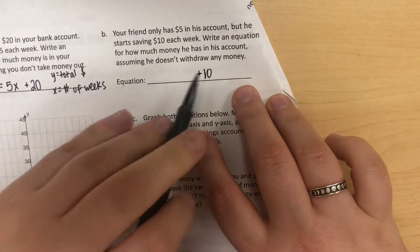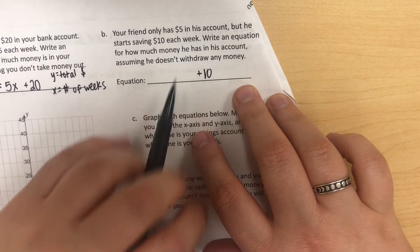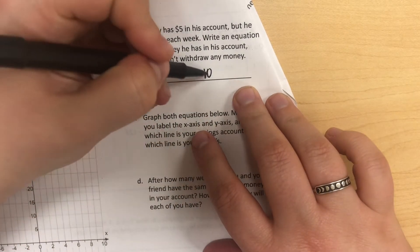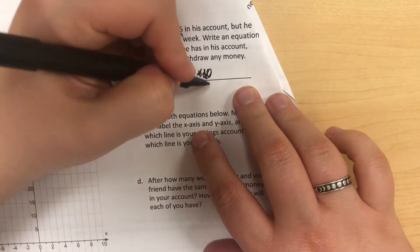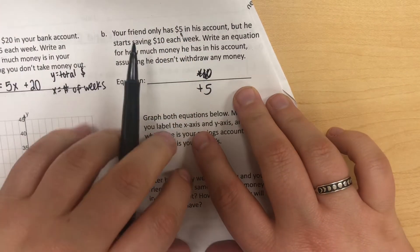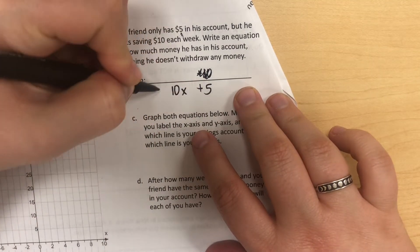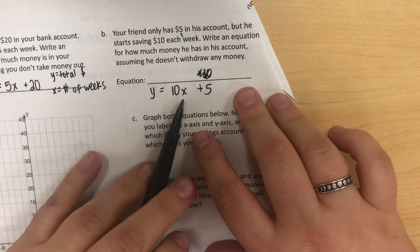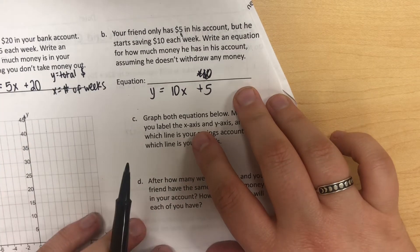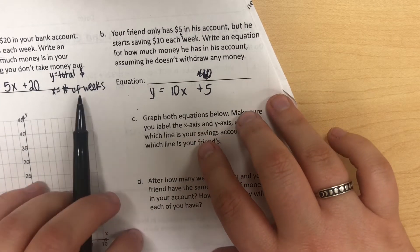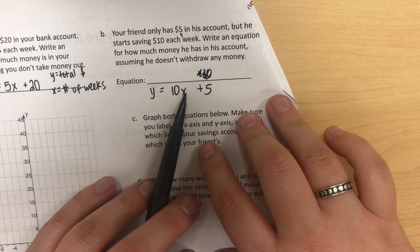He's starting with $5 in his account, and he is saving $10 each week. Once again, X and Y—Y is going to represent the total amount of money, and X would be the number of weeks your friend has been saving.